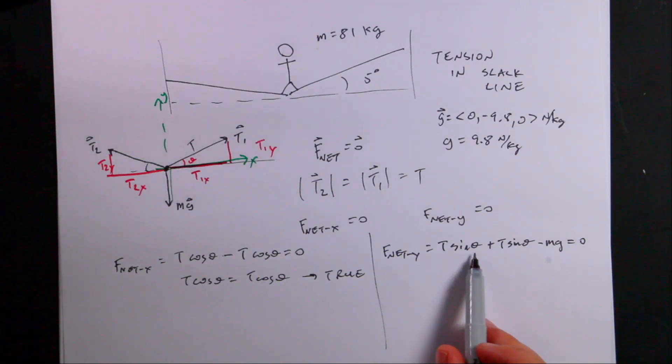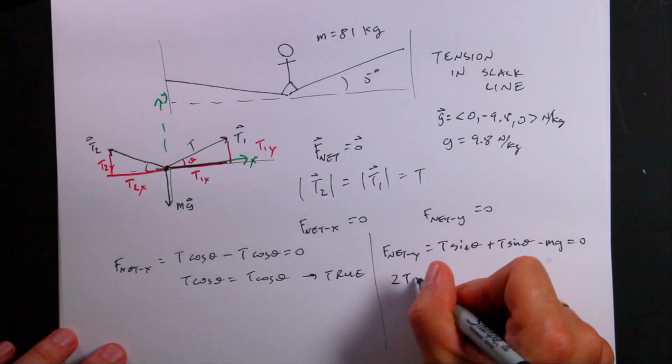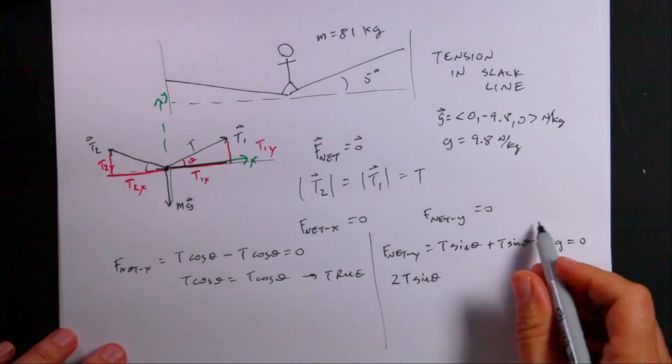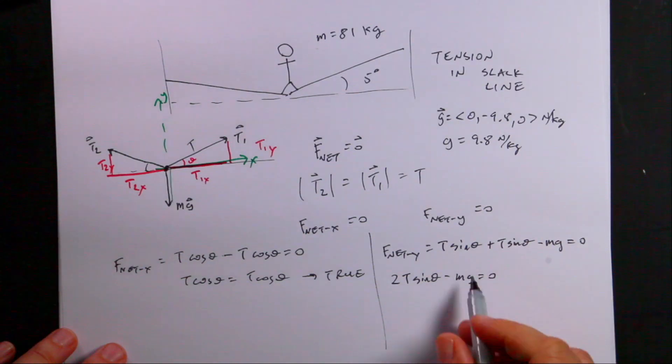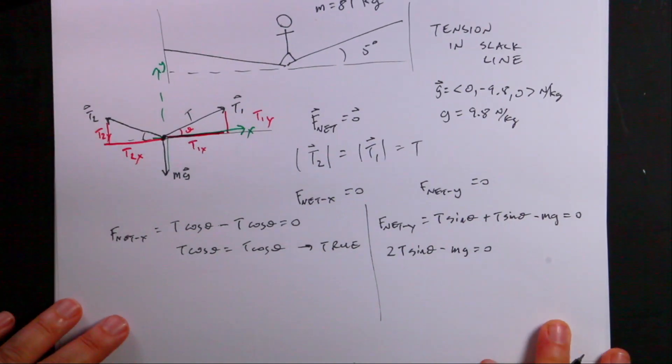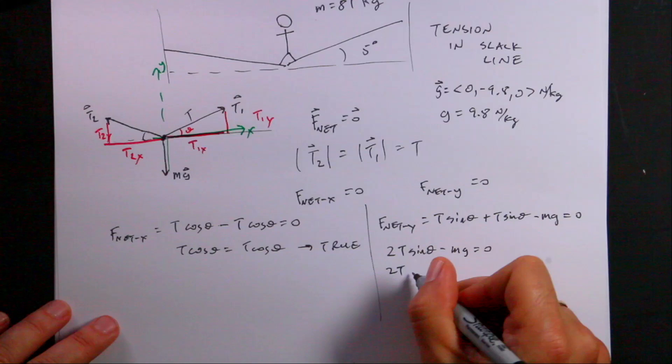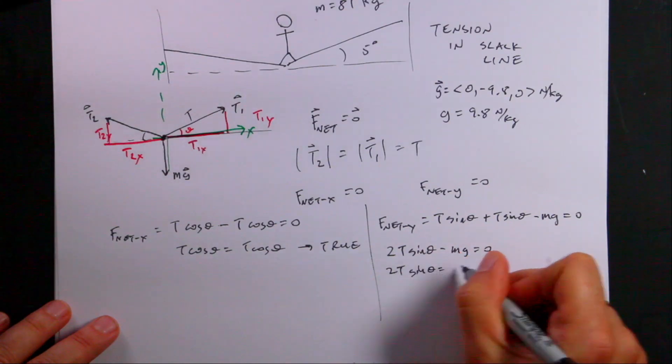Because here I have T sine theta plus T sine theta. That's 2 T sine theta. And then minus mg. Now I can add mg to both sides and I get 2 T sine theta equals mg.